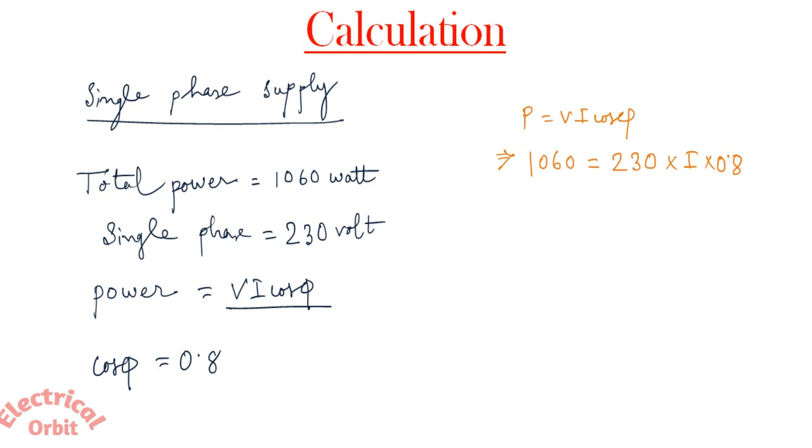In case of MCB rating, as I have said earlier, the rating will be solely on the value of current. Our main objective is to determine the value of the current so that we can determine the rating of the MCB. So here the value of the current we determined is 5.76 ampere.